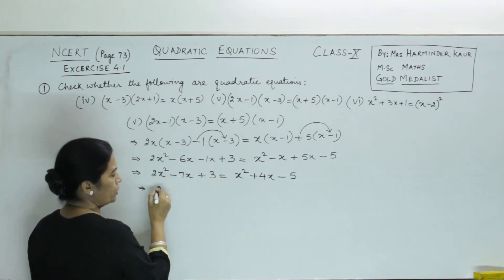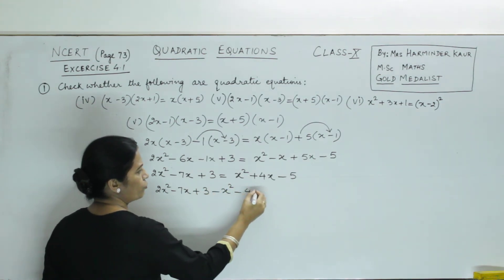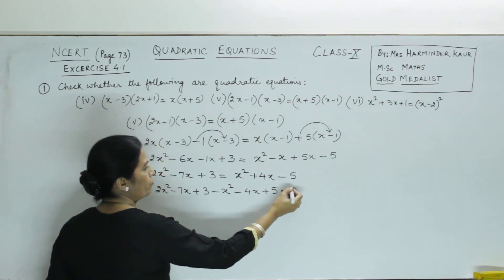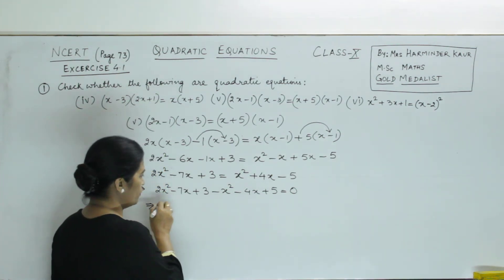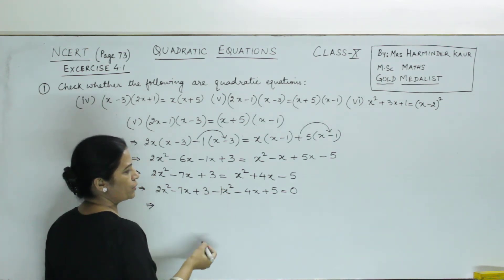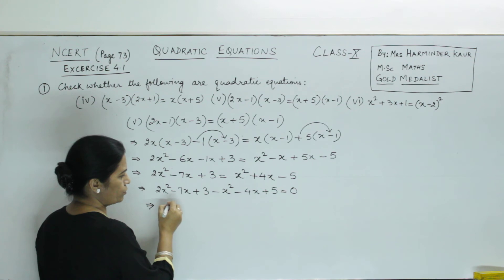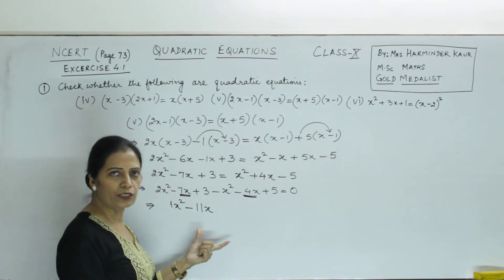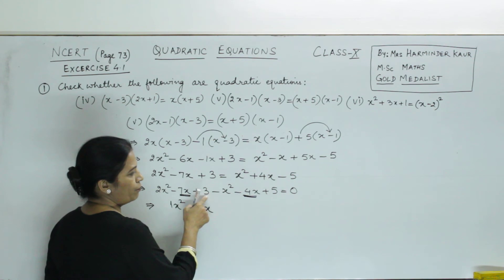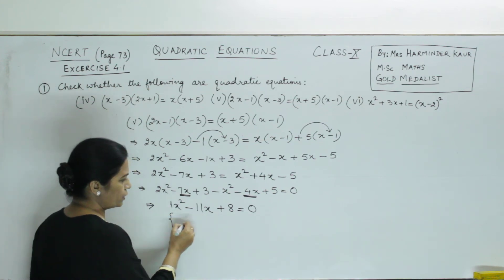Now, all the terms shifting on the left side. See what equation we will get. It becomes x² - 4x + 5 = 0. On right side no term remains. The term = 0. Now, 2x² minus 1x². There's no number here, that means it is 1. So, 2x² - 1x² becomes 1x². Minus 7x and minus 4x together will be minus 11x. Then plus 3 and plus 5, it is plus 8.